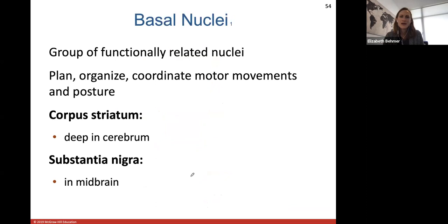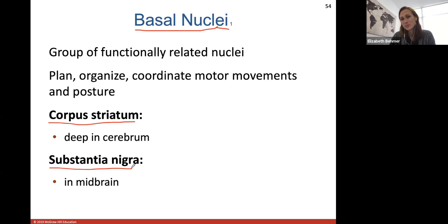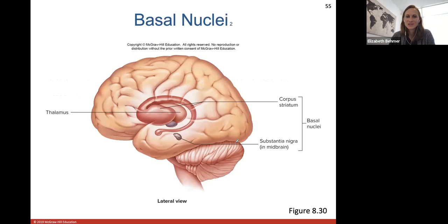Basal nuclei refers to groups of functionally related nuclei. These are groups of nerve cell nuclei grouped together because they have a similar function, and they help to plan, organize, and coordinate motor movements and posture. We have groups of basal nuclei called the corpus striatum and the substantia nigra — these are groups of nuclei located in the midbrain and on either side of the thalamus.